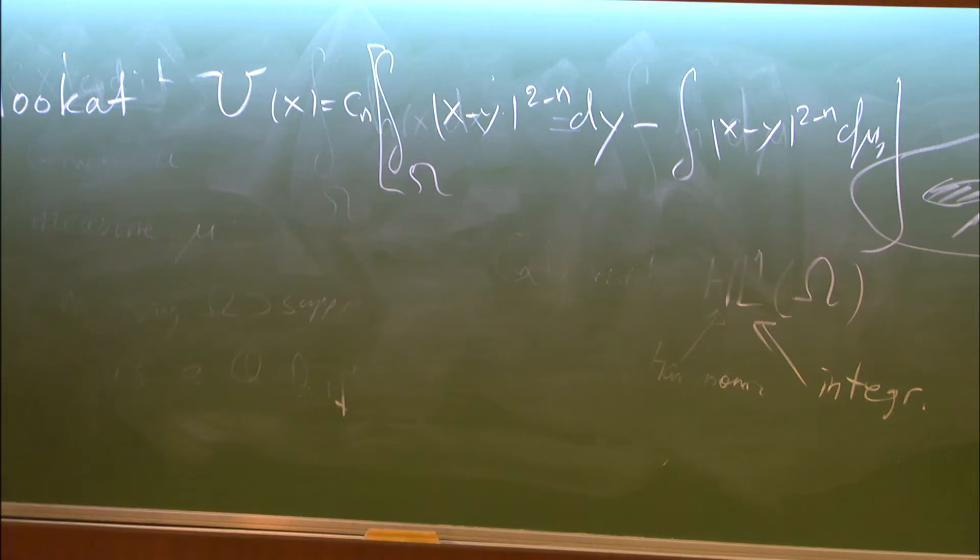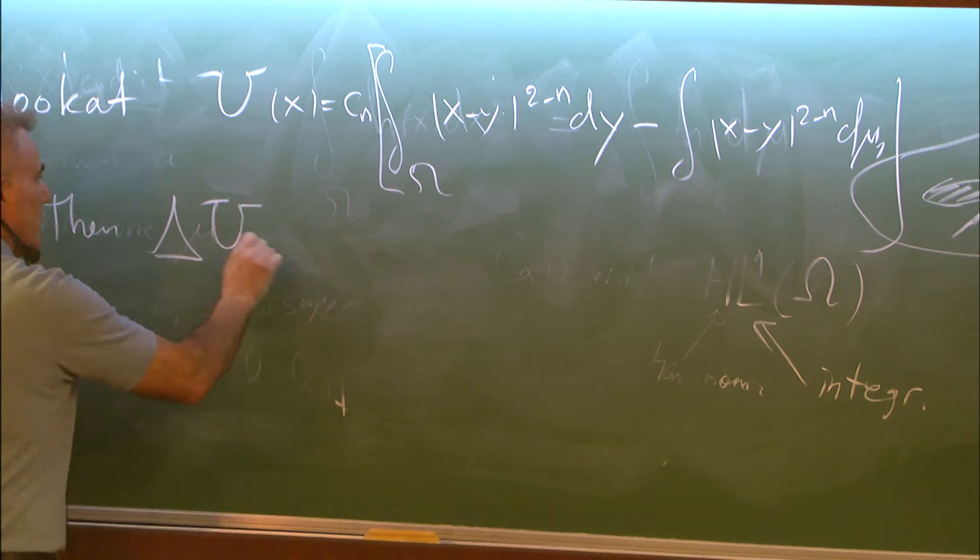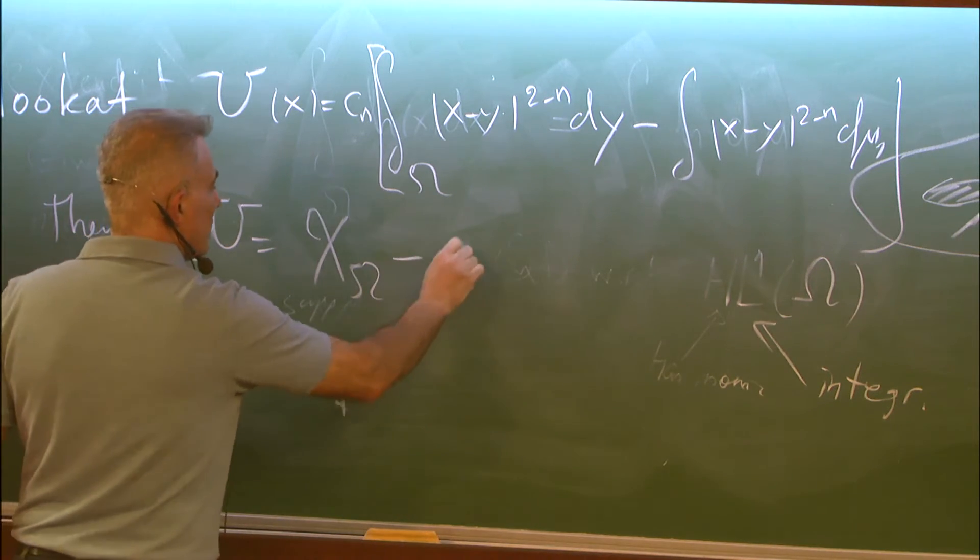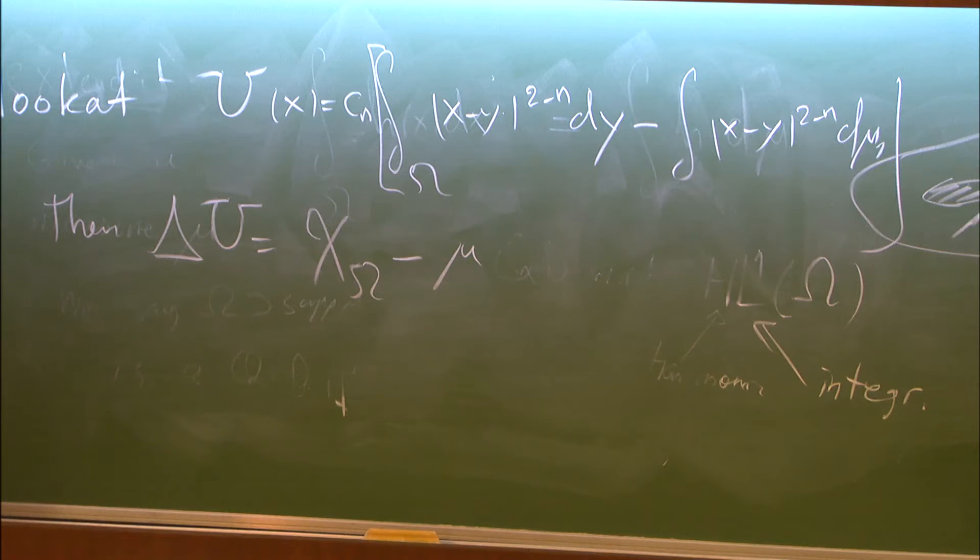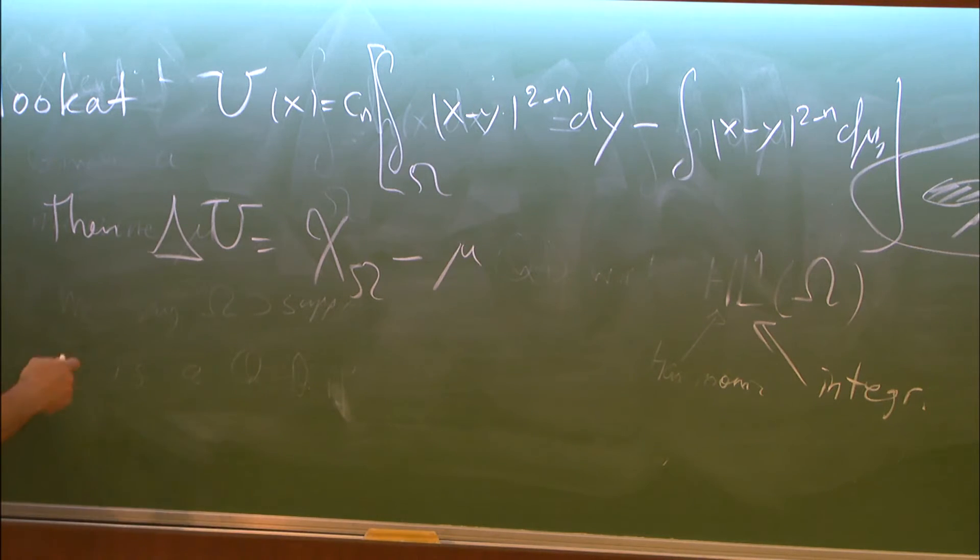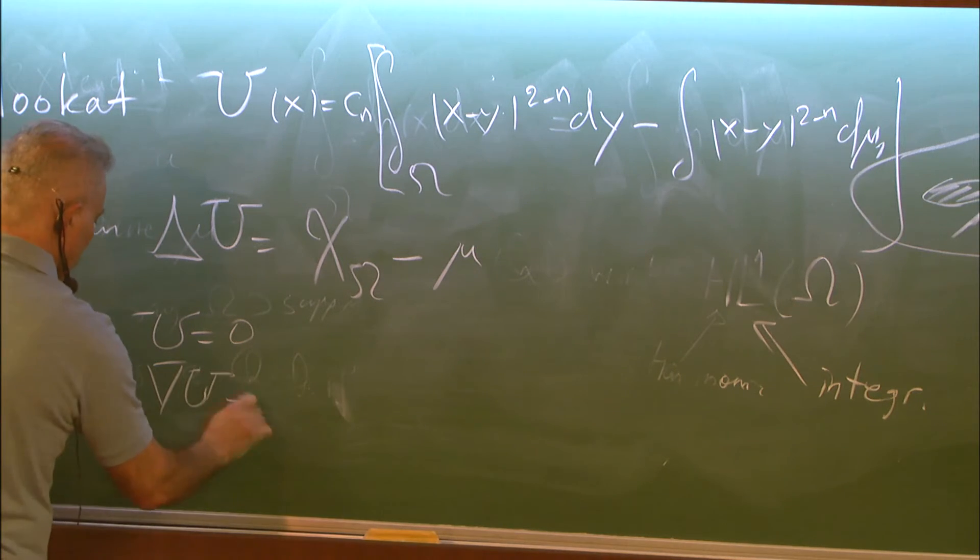I'm taking the difference and I'm letting x to be now inside. I know that Δu equals, because I'm putting a normalized factor here, of the characteristic function of omega minus the measure, which is just computational you get this. And then because of this, once x goes to the boundary, x is not in omega anymore, then u is going to be zero and also the gradient of u you can prove is going to be zero.